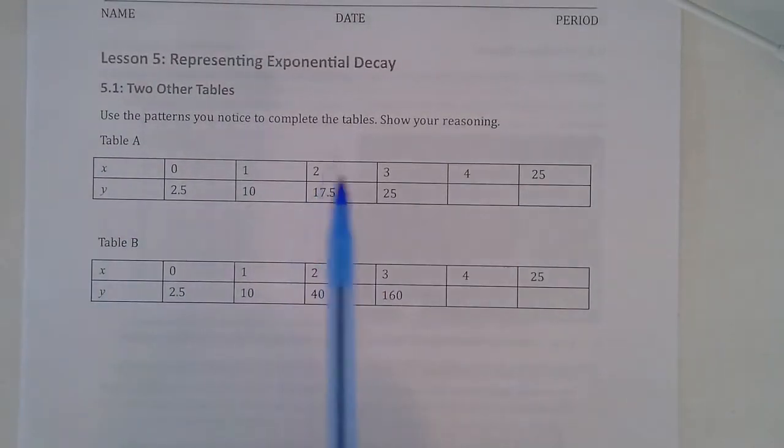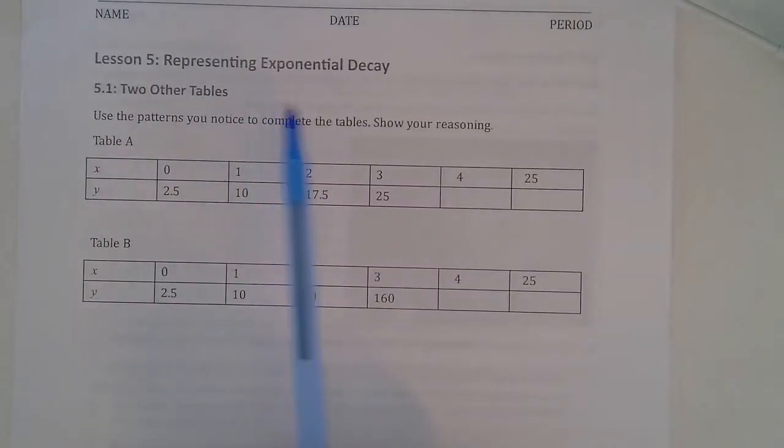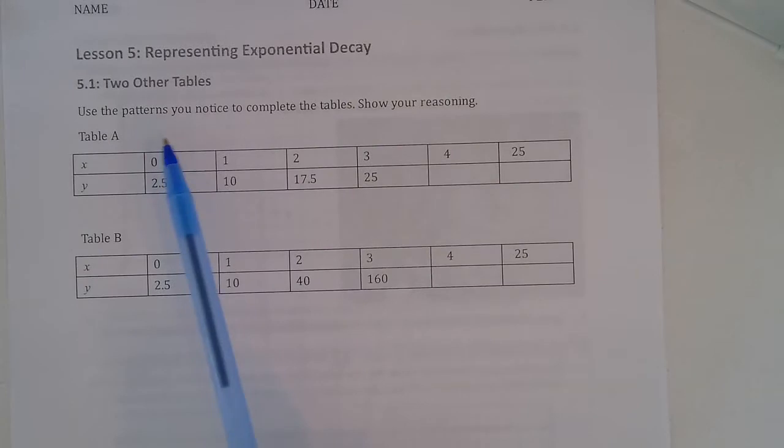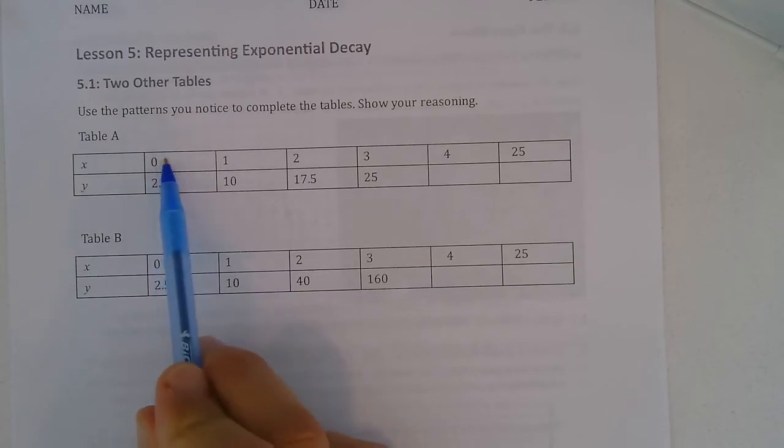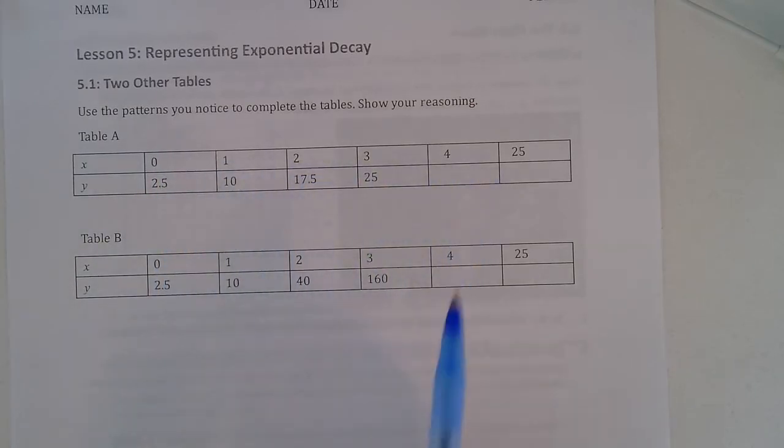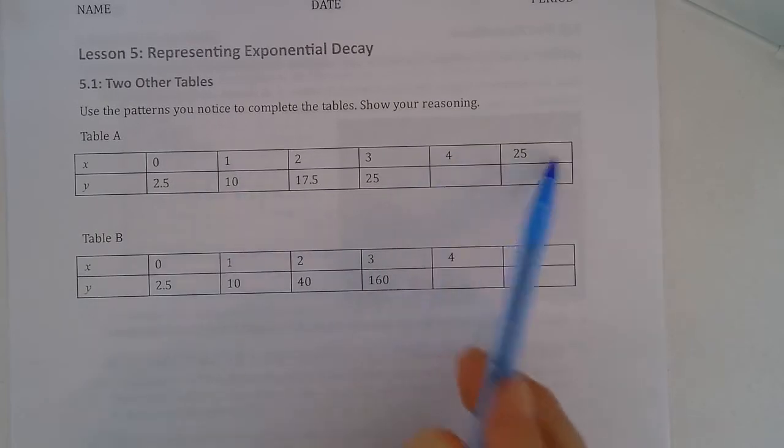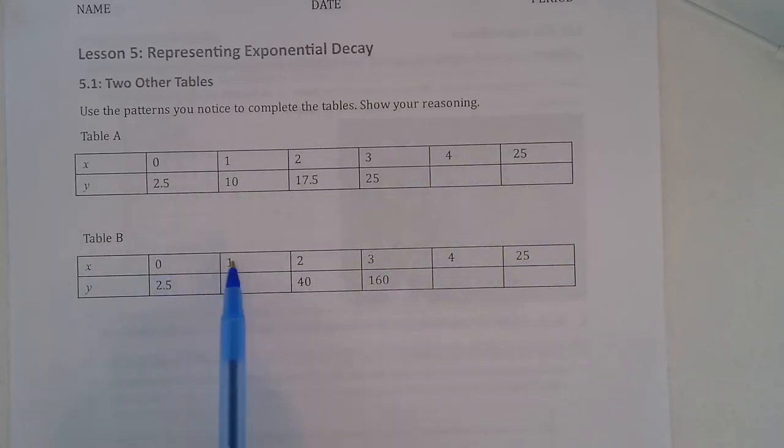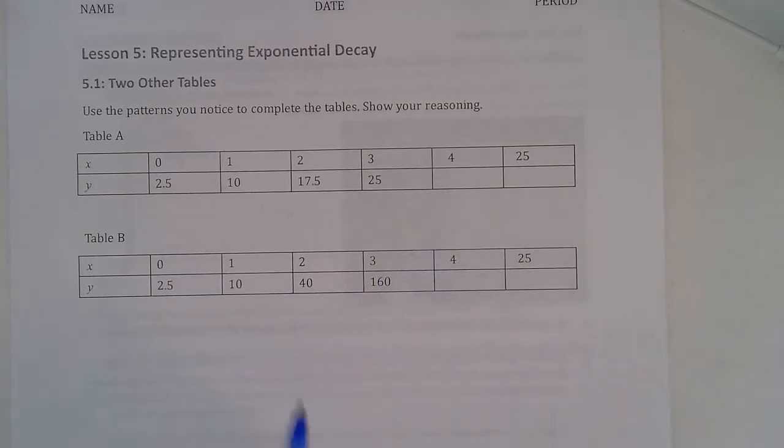So what we're going to do in lesson 5 representing exponential decay is we're going to look at patterns in a table. We need to use the patterns that we notice to complete the table. If I look here the x variable is increasing by 1, 2, 3, 4 and then 25. And then here for table B again 1, 2, 3, 4, this is 25 not 5.